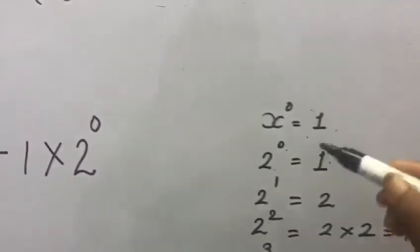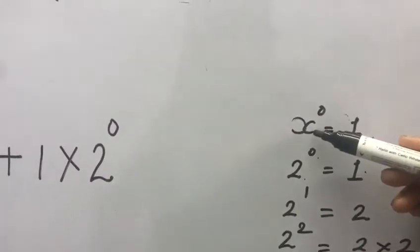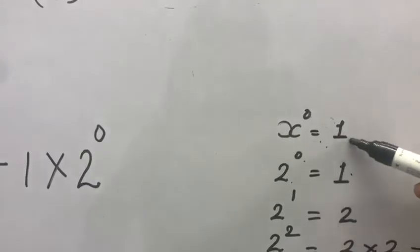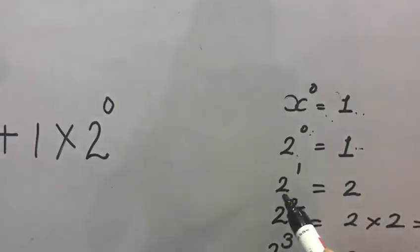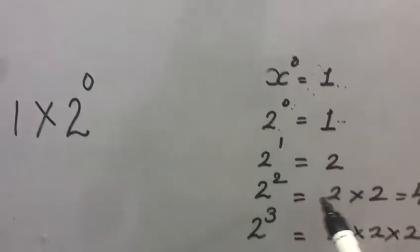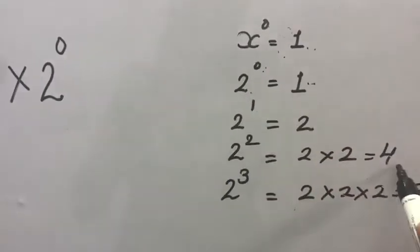As we know, any number with the power of 0 equals 1. So 2 to the power of 0 is 1. 2 to the power of 1 equals 2. 2 to the power of 2 answer is 4.